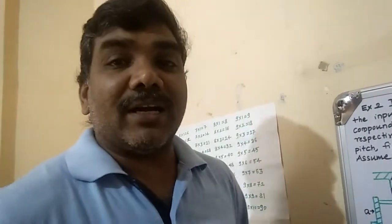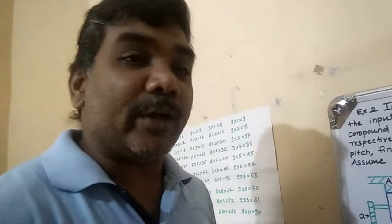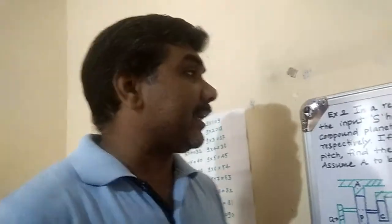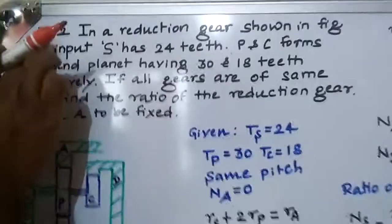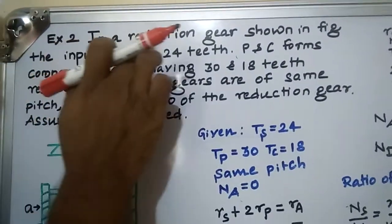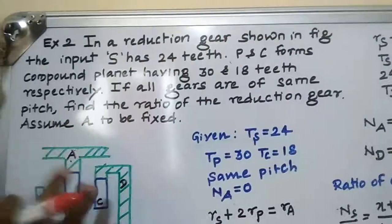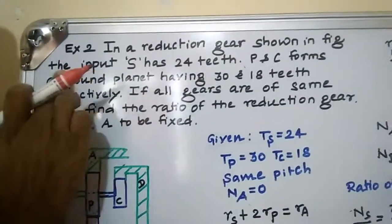Good morning, myself Prayla Bharkar. This is the second example related to epicyclic gear train. I will read the example. In example 2, in a reduction gear shown in figure — they are given a figure also.